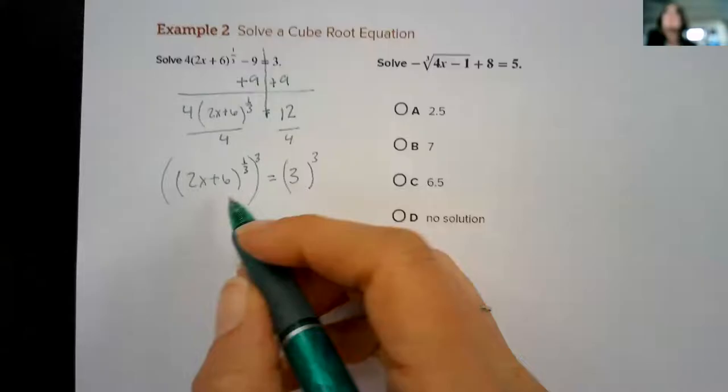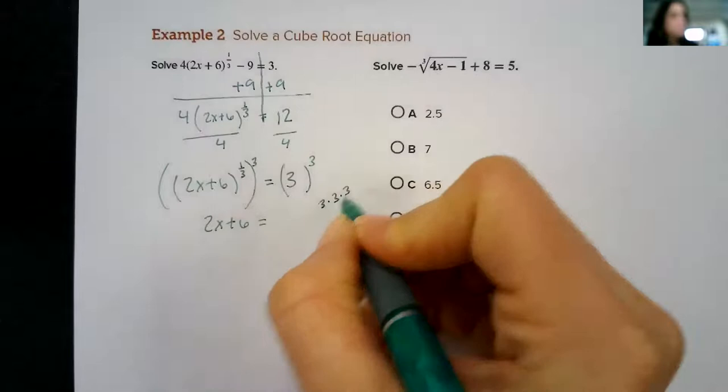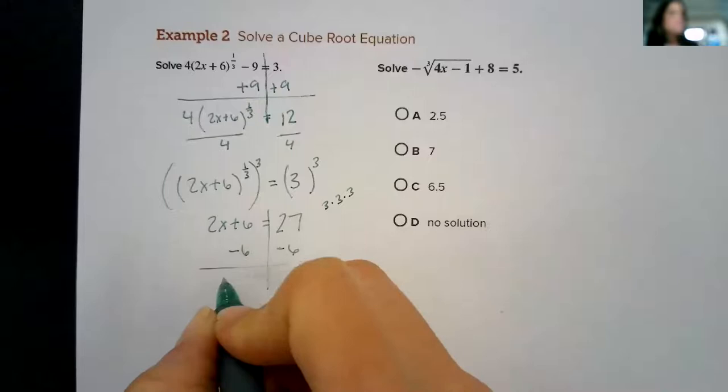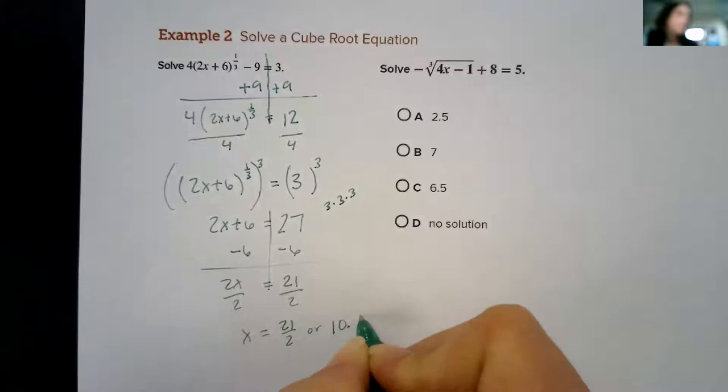Cube it. That cancels the cube root, so I would have 2x plus 6 equals 3 cubed. That's 3 times 3 times 3, which is 27. Then solve that. Minus 6, divided by 2. x is going to equal, you can leave that as 21 over 2 or you can call that 10.5.